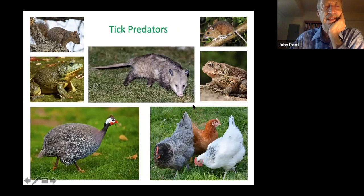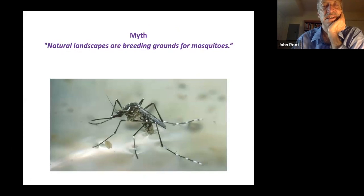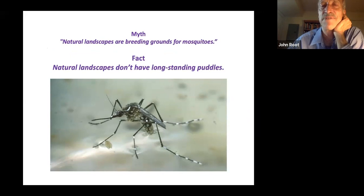Here are some natural methods of tick control. Once again, when we're doing nature a favor, nature does us a favor. How about mosquitoes? I would say that lawn-dominated landscapes are more likely to have standing puddles than natural landscapes. But if you are interested in having a pond — which is great for wildlife — stagnant water is where mosquitoes want to breed.